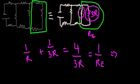And if we solve for Re, we get that Re is 3R over four. We can now redraw the circuit and replace that parallel part with an equivalent resistance of 3R over four.